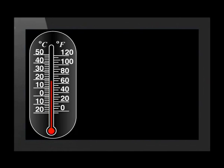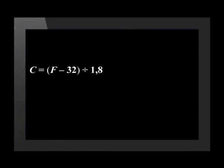This thermometer shown measures temperature in both Fahrenheit and Celsius. There are two formulas that we use to convert temperatures. The first is for converting degrees Celsius to degrees Fahrenheit. It states that degrees Celsius equals degrees Fahrenheit subtract 32 degrees, and then divide the answer by 1.8.